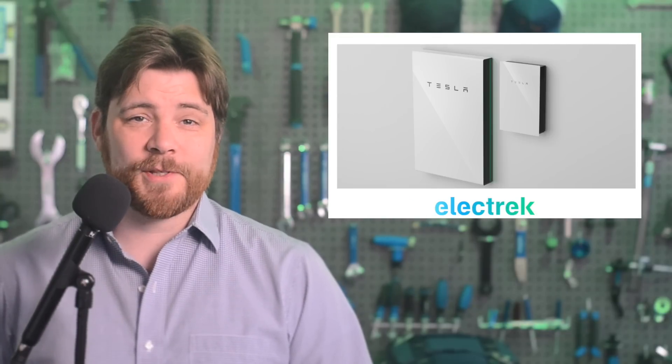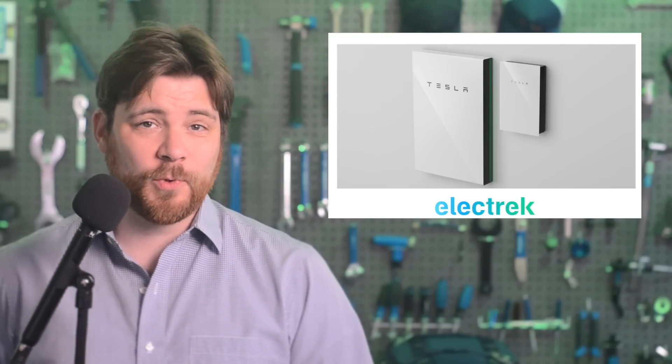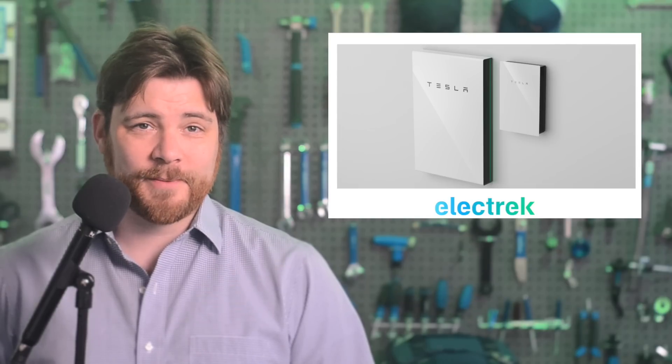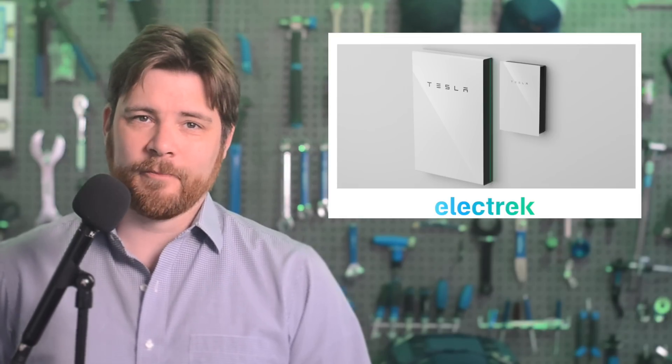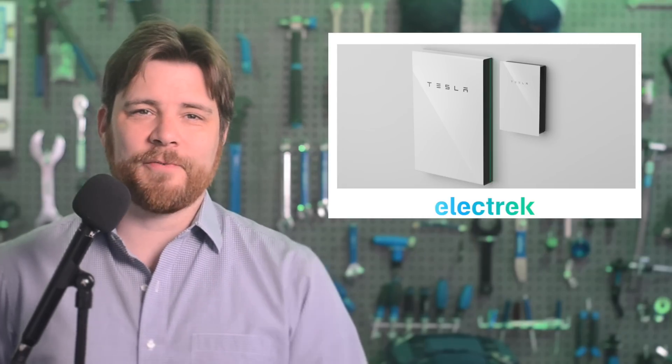Tesla has confirmed that it now has installed 500,000 power walls worldwide, and it's growing fast. In May of 2020, Tesla confirmed that it installed its first 100,000 power walls, which took the company almost four years. A year later in May, they reached 200,000, and now they've reached 500,000.